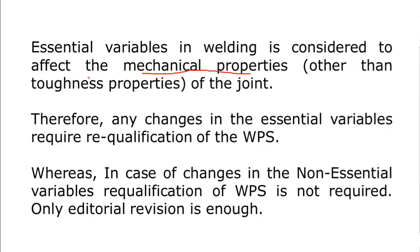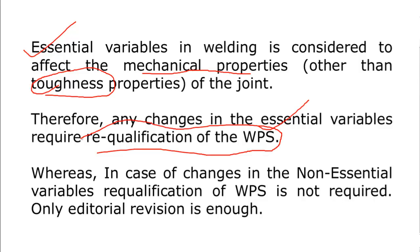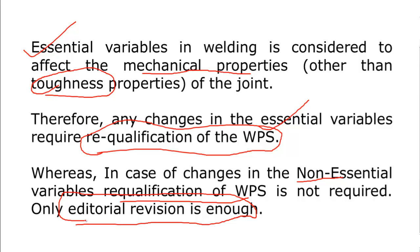Except for toughness property — all other mechanical properties fall under essential variables. For toughness, the supplementary essential variable comes into the picture. Since essential variables affect mechanical properties, any change to them requires re-qualifying your WPS by conducting a procedure qualification test. For non-essential variables, you only need to do an editorial revision — no procedure qualification test is needed.